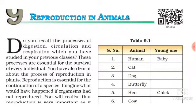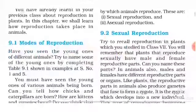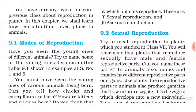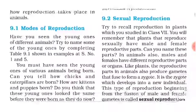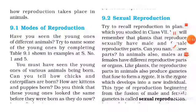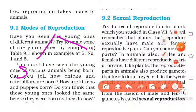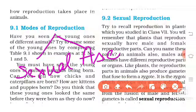In this video we are going to discuss about the modes of reproduction. The first mode of reproduction is sexual reproduction, in which we will discuss about male and female reproductive organs. The modes of reproduction are sexual and the second one is asexual.